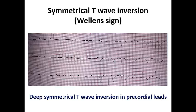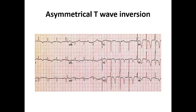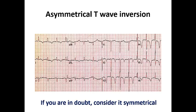In this ECG example, the T-wave inversion appears asymmetrical, as the descending limb descends slowly and the ascending limb ascends rapidly. If you are in doubt and cannot decide whether it is symmetrical or asymmetrical, consider it as the worst case and admit the patient, check serial ECGs, and check cardiac markers to determine whether it is suggestive of ongoing myocardial ischemia or just a strain pattern due to structural heart disease like LVH or cardiomyopathies.